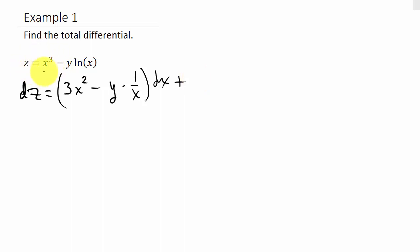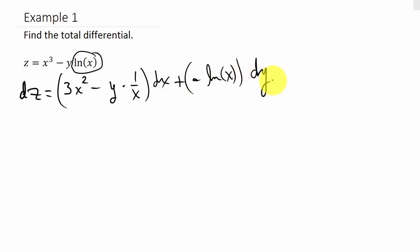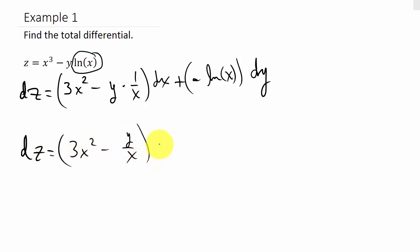The derivative of x cubed would be 0, because we're taking the partial of z with respect to y, so x is considered the number. And then here, minus y natural log x — natural log x is just a number, like a 7, or a 9, or a 10. The derivative of 10y is 10, so the derivative of natural log x times y would just be minus natural log x times dy.